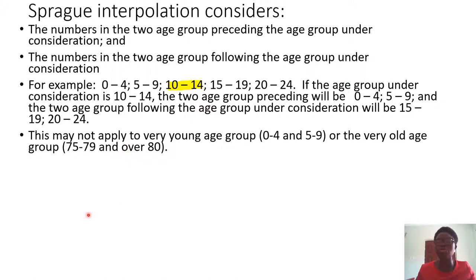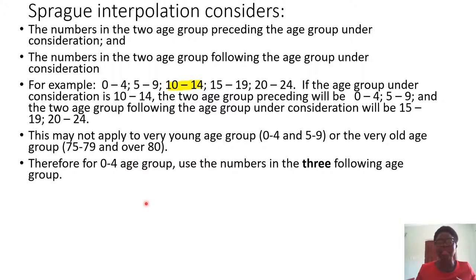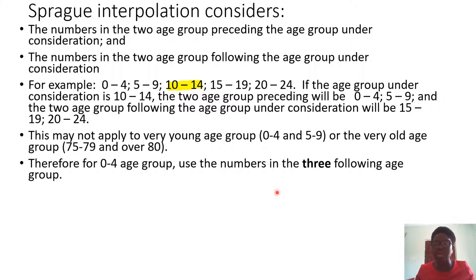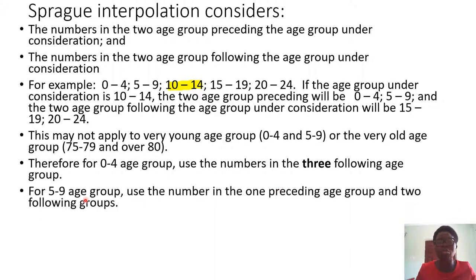So what do you do in these instances? If you are working with age group 0 to 4, use the numbers in the three following age groups. If you go back to that table, you'll see that in the first section you have entries up to F plus 3, meaning you are going to consider all three of those following sections. But if you have two groups before and two after, you do not need to consider all three.